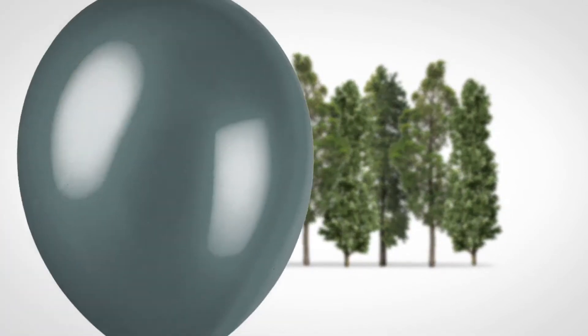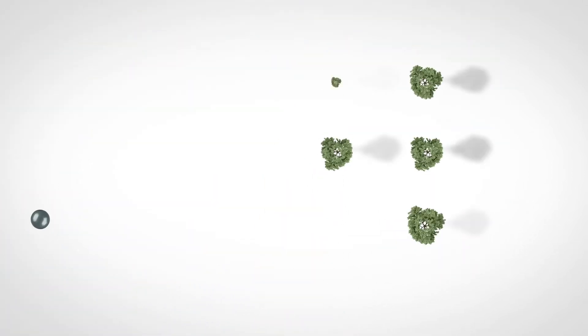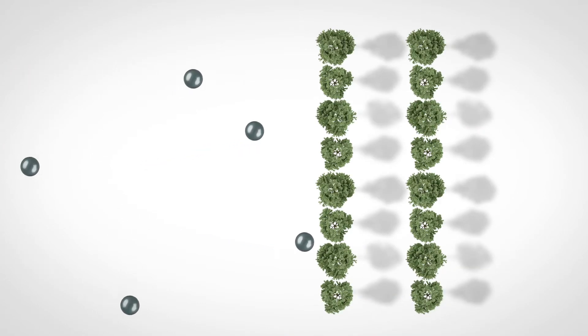Now imagine that this balloon represents the oil you want to filter from the air. As it drifts on the air current, it will get stuck in the leaves of the first or second row of trees. That is filtration. The old school way.